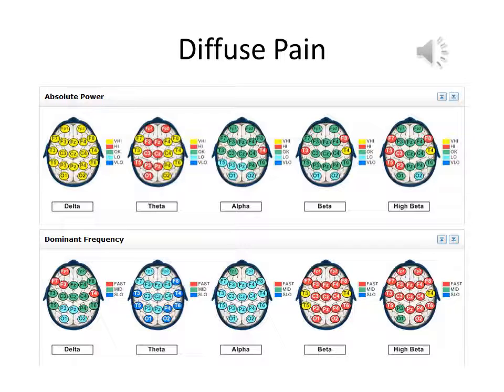Note the right temporal beta as well. Training down the right hemisphere theta and increasing low beta, or SMR, produced significant relief. Decreasing delta frequencies also reduced the client's tinnitus.